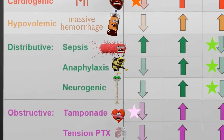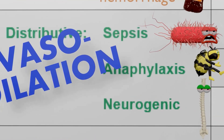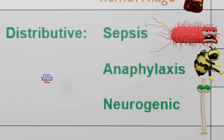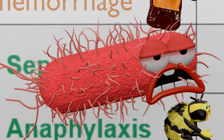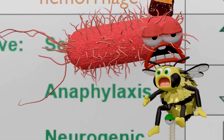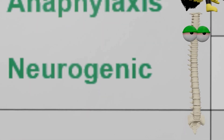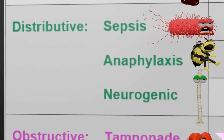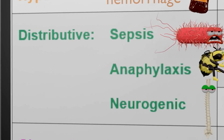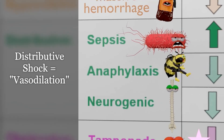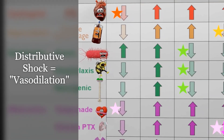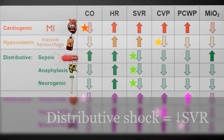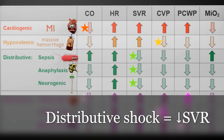Let's move on to distributive shock. Distributive shock is when there's systemic vasodilation. In sepsis and anaphylaxis there will be systemic vasodilation, while in neurogenic shock the problem is in sympathetic tone — the body can't properly vasoconstrict and therefore indirectly vasodilates. In all three subtypes, the parameter to focus on is the same: decreased systemic vascular resistance, due to the increased vasodilation, which leads to reduced tissue perfusion.